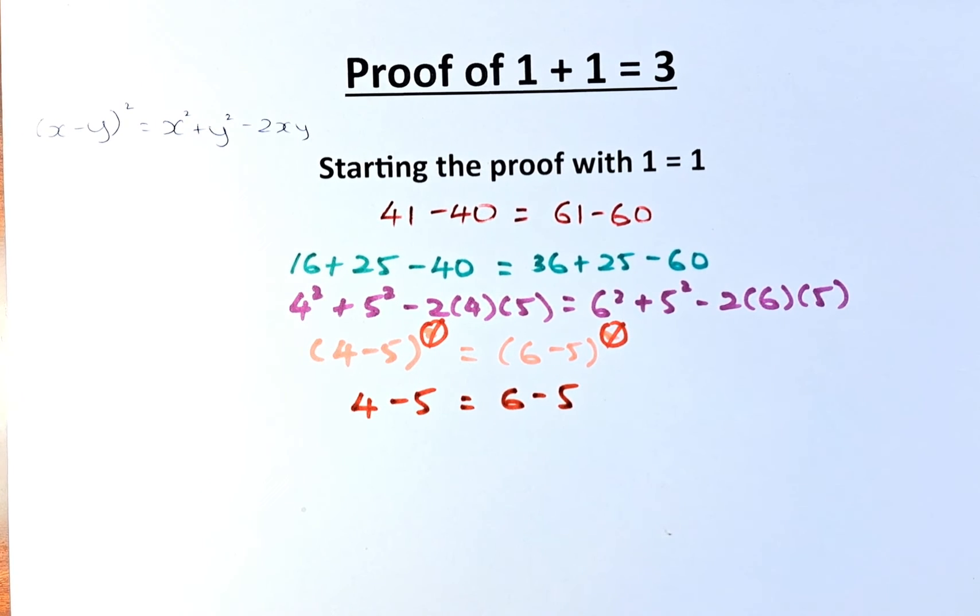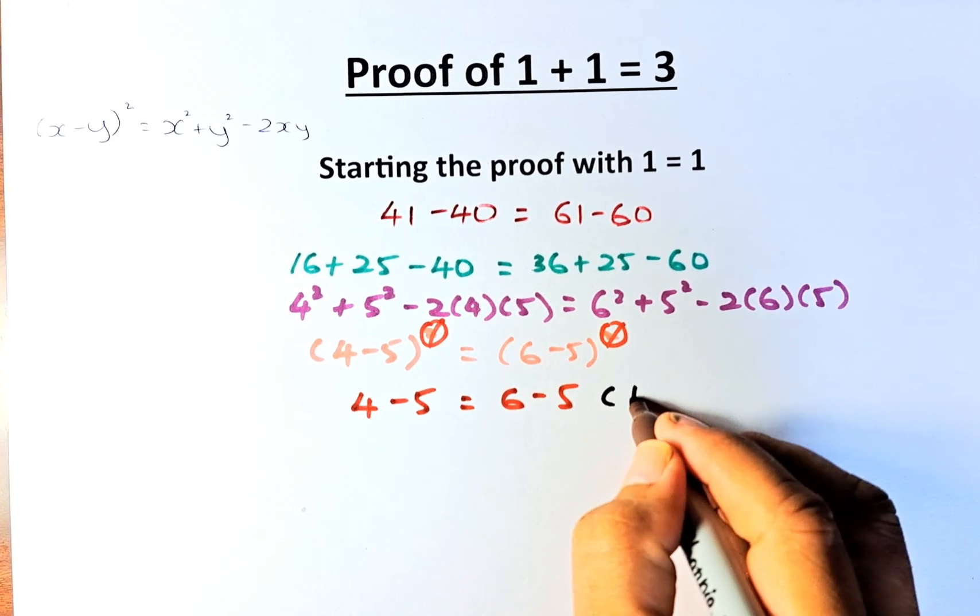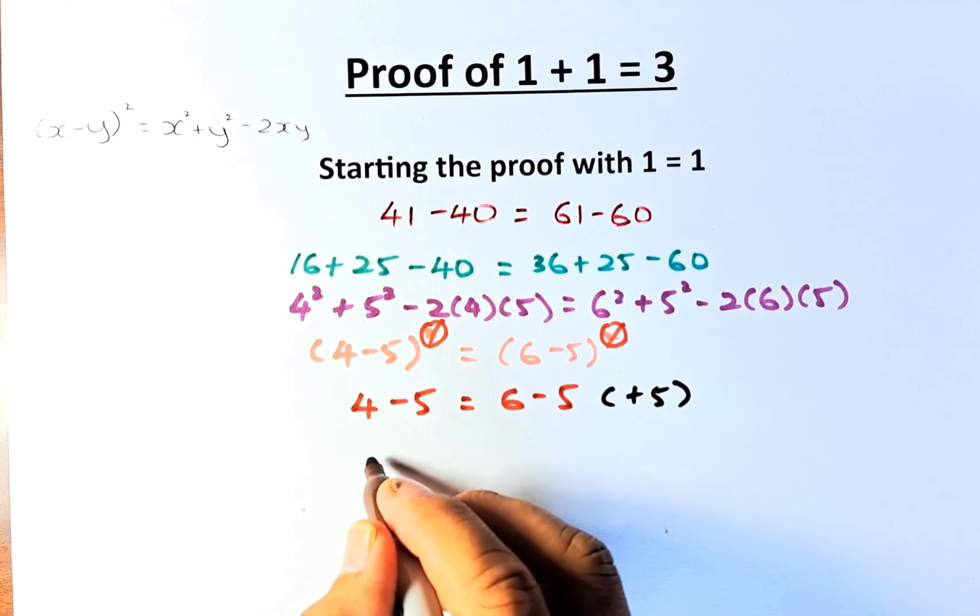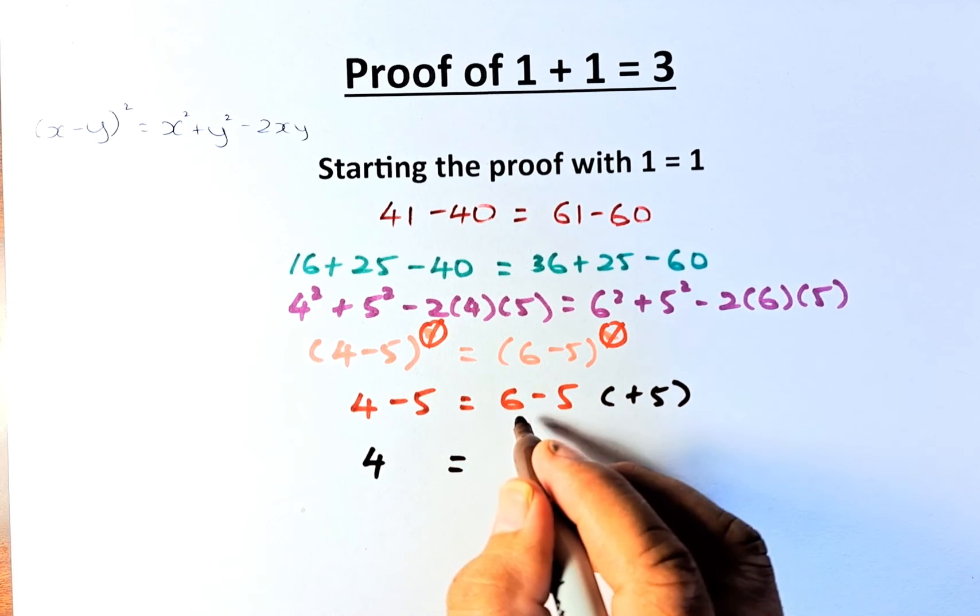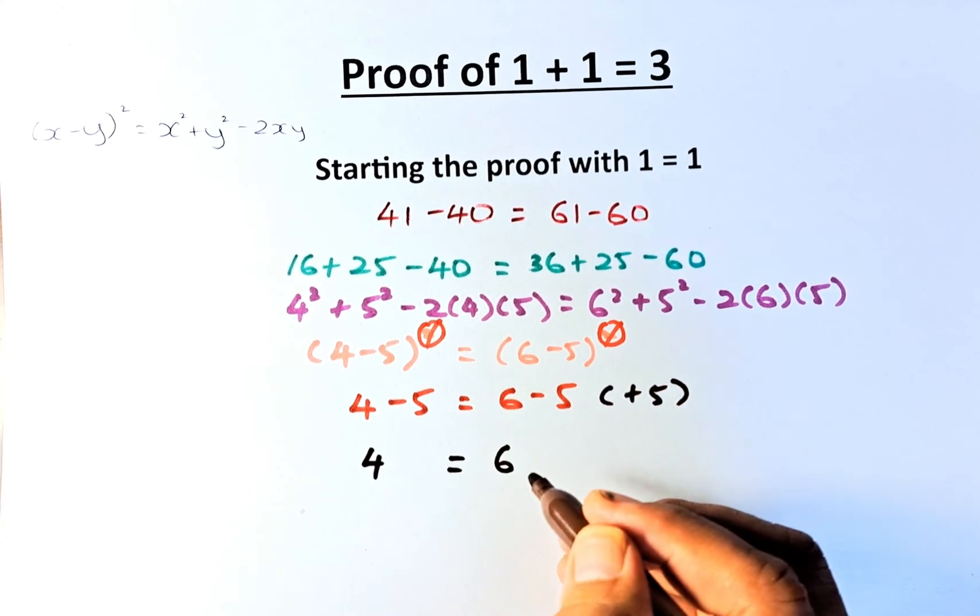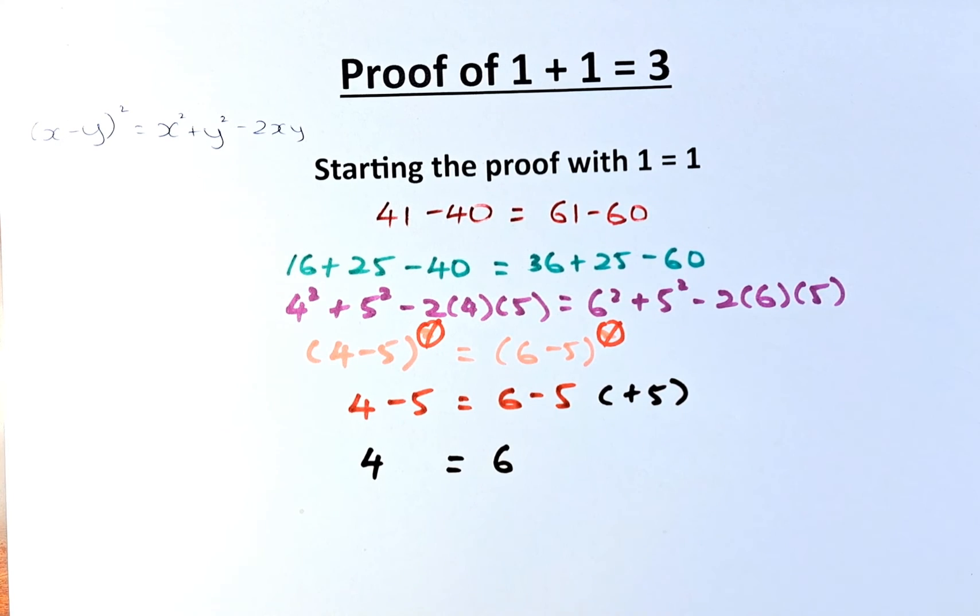So what we're going to do is add 5 to both sides of the equation. That becomes 4 minus 5 plus 5 equals 0, and 6 minus 5 plus 5 becomes 6. So now, we are going to simplify.